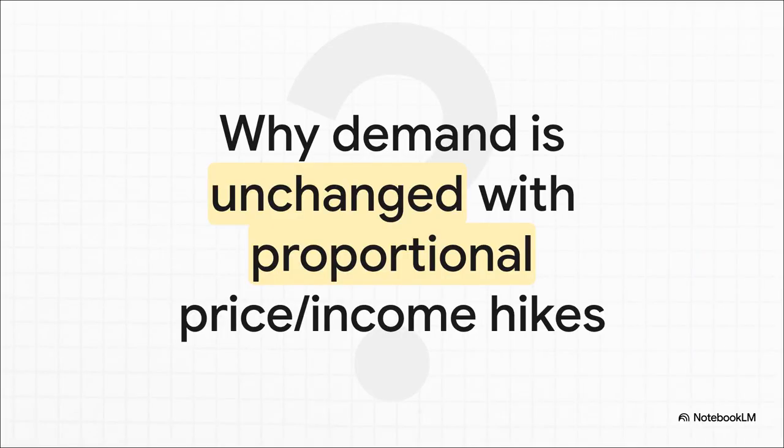Here's the question we're going to unpack. When you strip away all the formal language, what is it really asking? It's basically saying: if everything suddenly costs twice as much, but you also earn twice as much, why wouldn't you buy more or less stuff? When you put it like that, it sounds way less scary. The fancy wording is just there to test if you know the core economic principle, and I bet you already get this on an intuitive level.